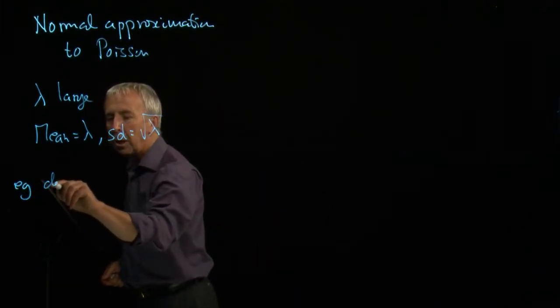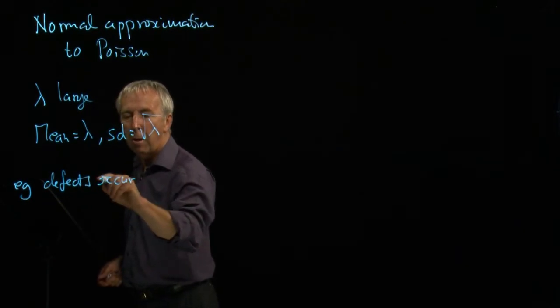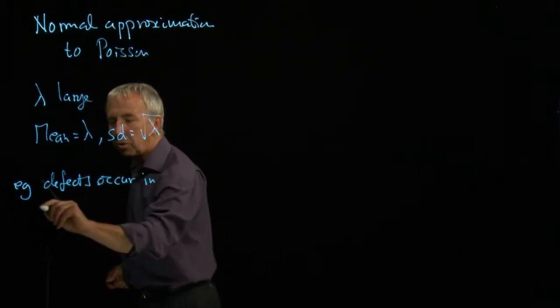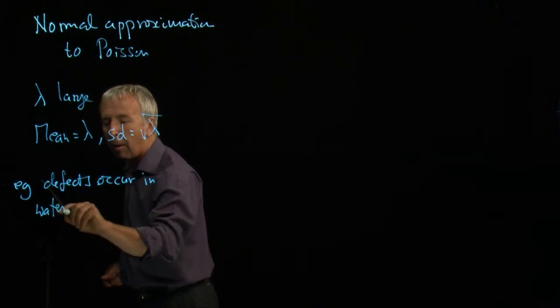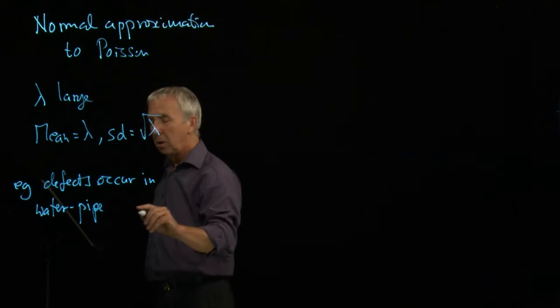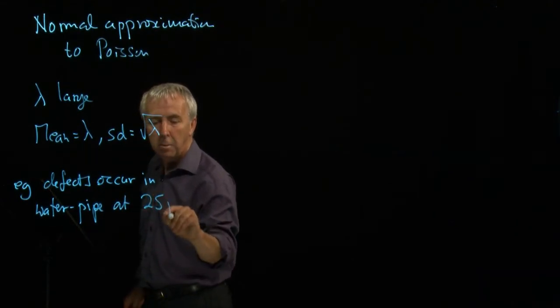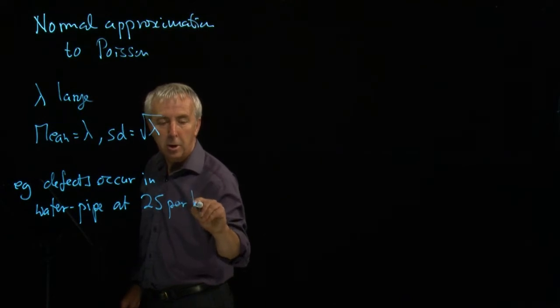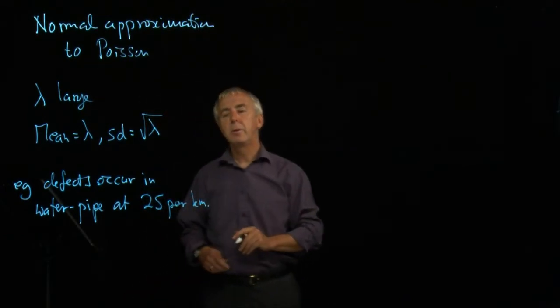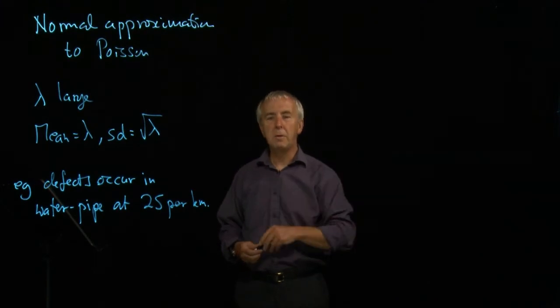Suppose, for example, defects occur in a water pipe at a rate of 25 per kilometer. So on average, each kilometer of water pipe has 25 defects.